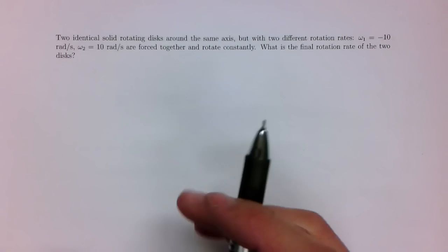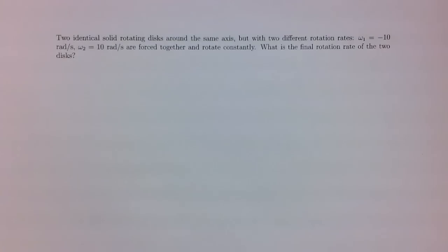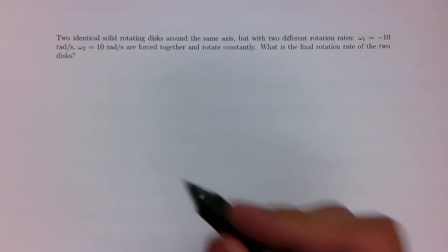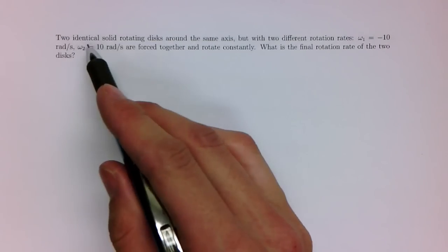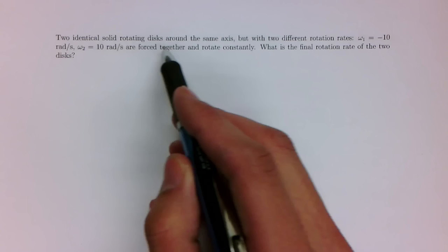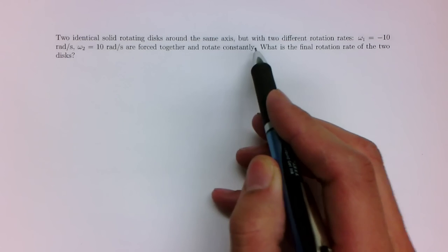In this example, we will consider the conservation of angular momentum as applied to a rotating disc system. Two identical solid rotating discs around the same axis, but with two different rotation rates.